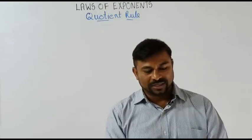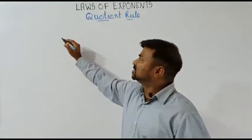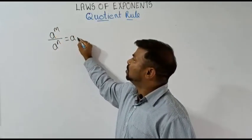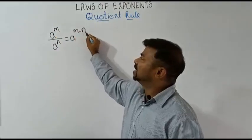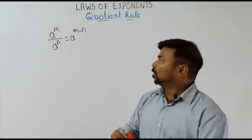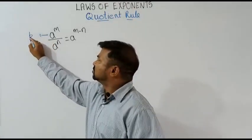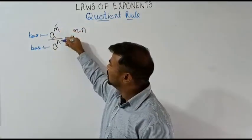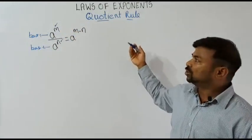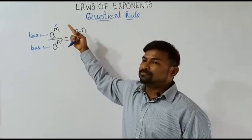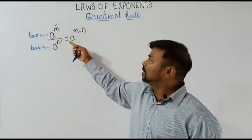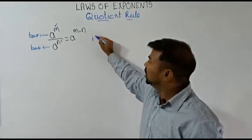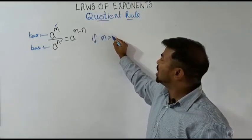The quotient rule comes like this: a to the power m divided by a to the power n equals a to the power m minus n. As you all know, the bottom one is nothing but the base, and the top parts are nothing but the powers. So the quotient rule says: a to the power m divided by a to the power n equals a to the power m minus n.